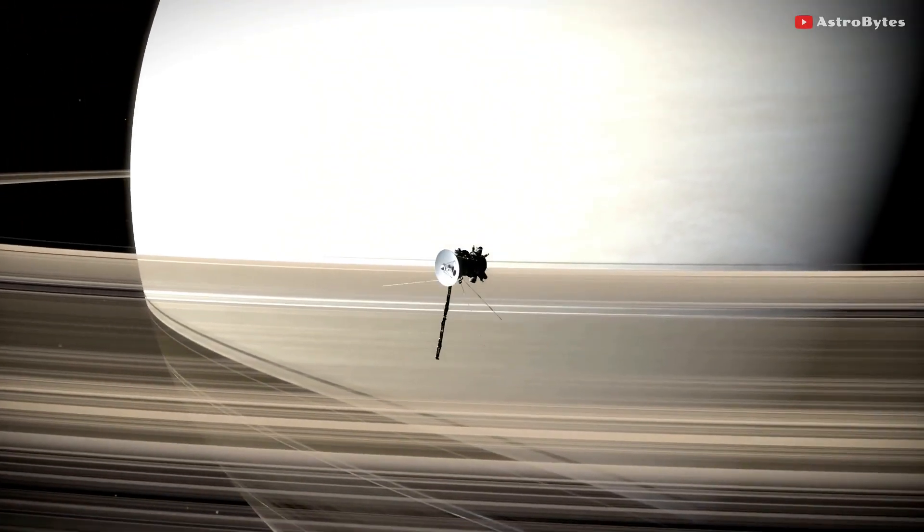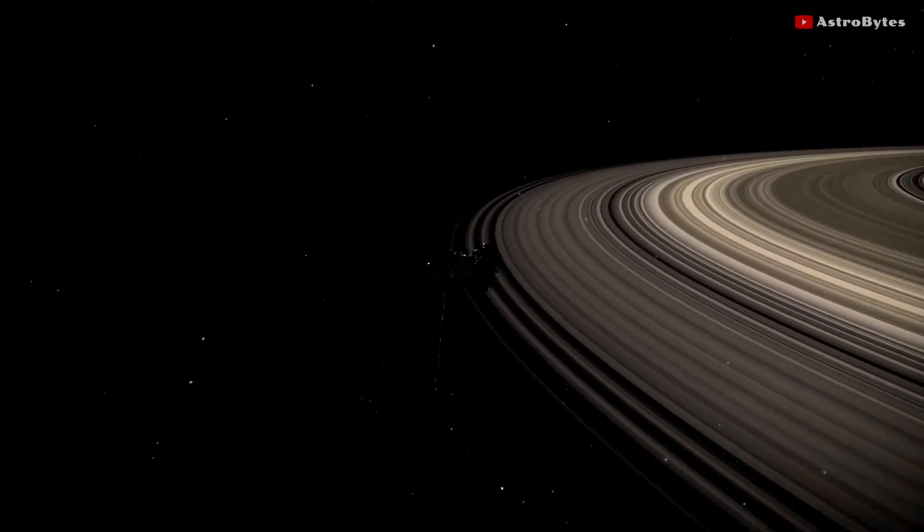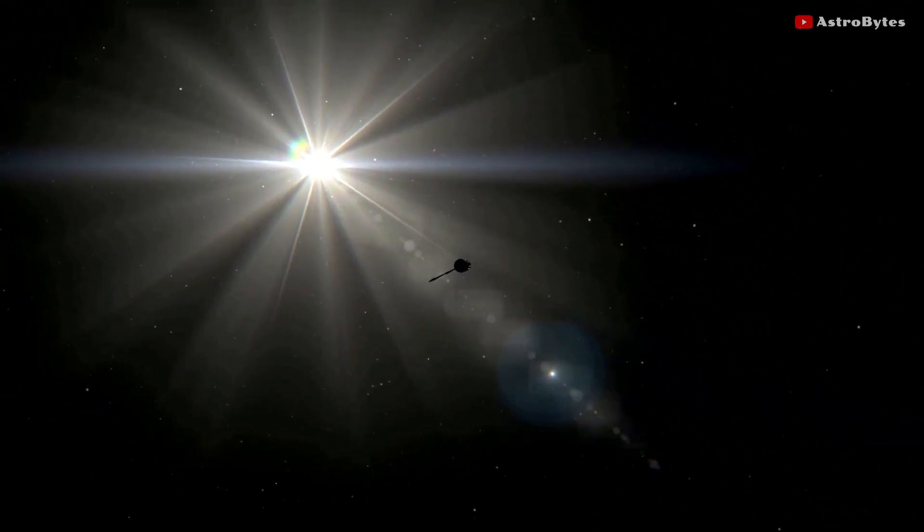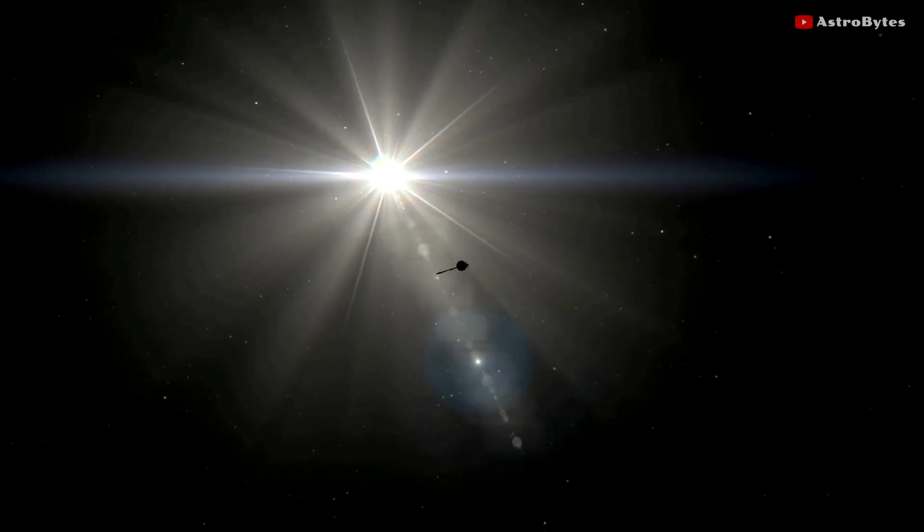Although neither Voyager spacecraft is heading toward any particular star, Voyager 1 will pass within 1.6 light-years distance of the star Glees in about 40,000 years.